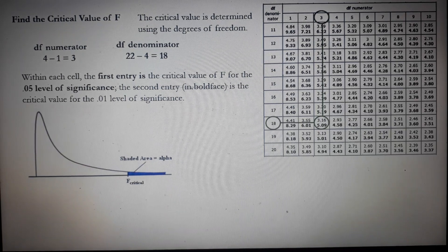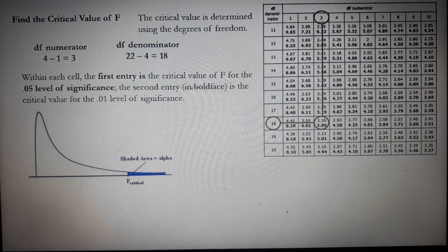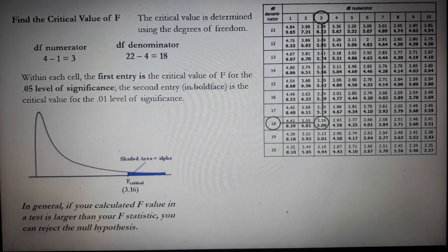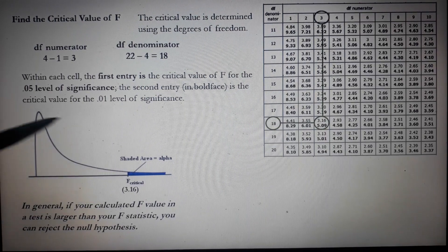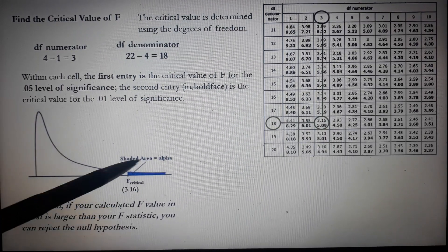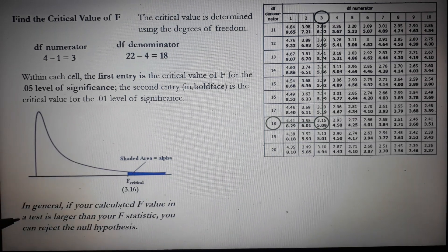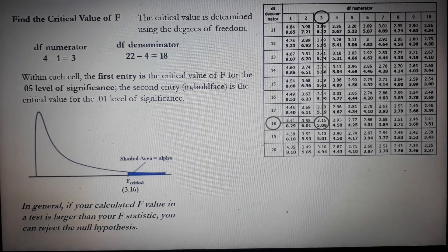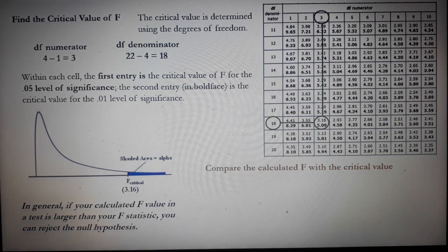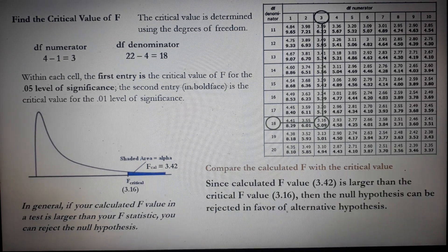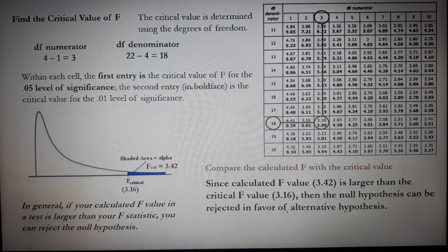This is the F distribution curve. The critical value is 3.16, dividing the region of acceptance from the region of rejection — the same approach as in the T-test. In general, if the calculated F value is larger than the critical F statistic, you reject the null hypothesis. Our calculated F of 3.42 is greater than the critical F of 3.16. Therefore, the null hypothesis is rejected in favor of the alternative hypothesis.